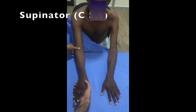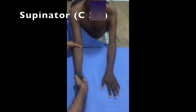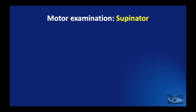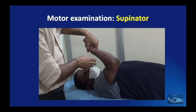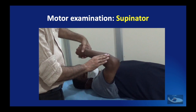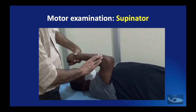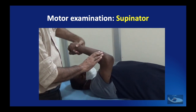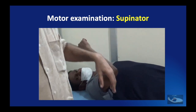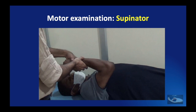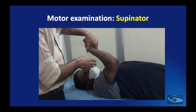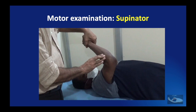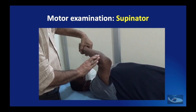When testing the supinator, we must remember that the biceps must be kept elongated — that is, the elbow must be kept extended — and the patient is asked to forcefully supinate the forearm against resistance. Another method is to have the patient lie supine with the shoulder flexed to 90 degrees, elbow flexed maximally and forearm in mid-prone position, then ask the patient to supinate against resistance. In this position, the action of the biceps is negated. The supinator muscle can be palpated on the radial side of the proximal third of the forearm, just radial to the palpable subcutaneous border of the ulna.